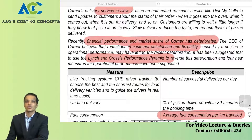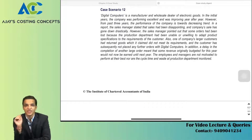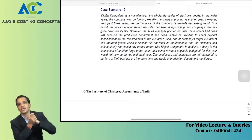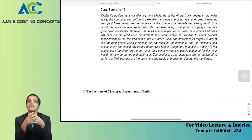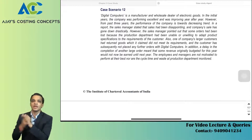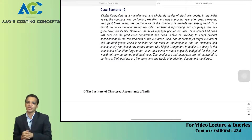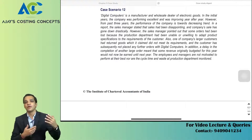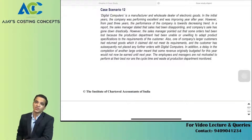Now let us start with question number 12, case scenario 12 — again a question of performance pyramid. As we discussed, performance pyramid starts with corporate strategy — that is, corporate vision — then market share and finance or profitability, then flexibility and customer satisfaction, and at the fourth level: reduction in waste, setup time or process time, and external factors like delivering better services. Question number 12 is about Digital Computers — a manufacturer and wholesale dealer of electronic goods.